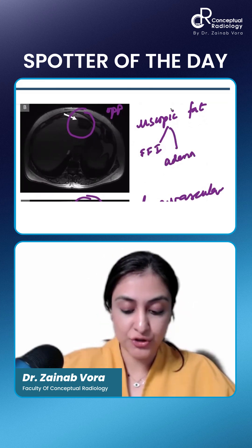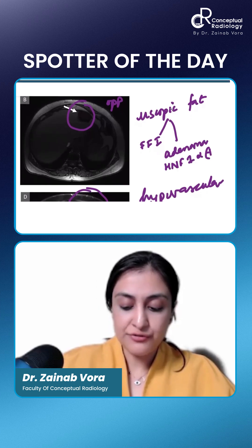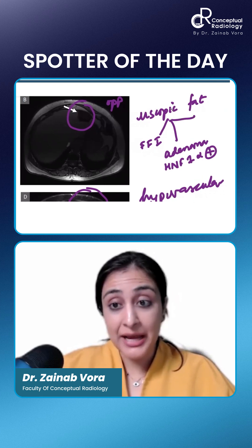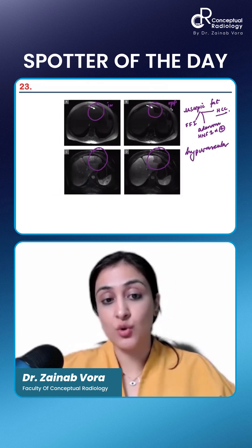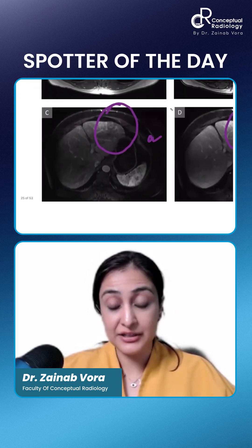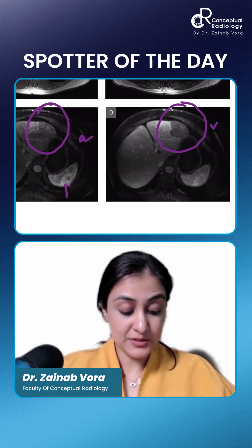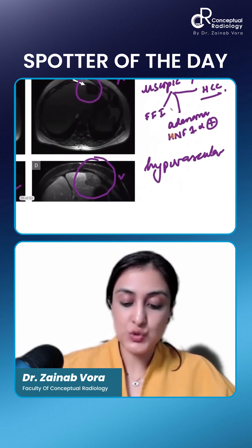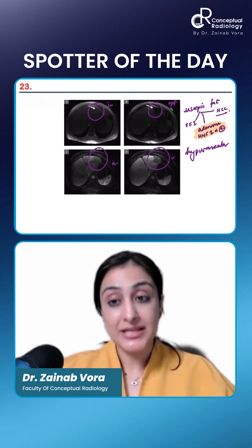Second differential is adenoma for sure. Particularly HNF1-alpha positive, which will have complete microscopic fat — that is what we are thinking of. That will be hypovascular as well. And HCC? It is not HCC because it is not hypervascular, not showing arterial enhancement. This is arterial phase, this is venous phase. You can make it out from the splenic enhancement that it is not really enhancing. So HCC is unlikely. This is why this is HNF1-alpha positive adenoma. Adenoma is correct.